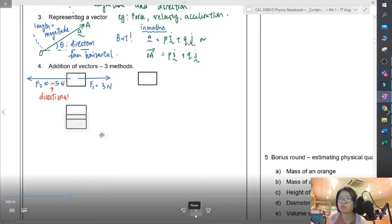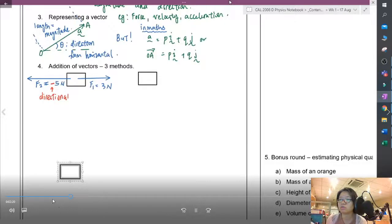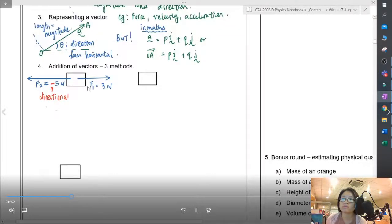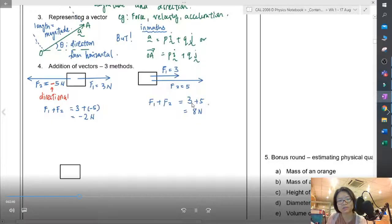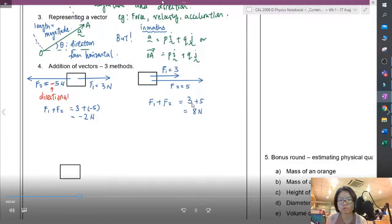This negative doesn't mean that the 5 N owes anyone anything. This is just directional. Since they're in opposite direction, to find the resultant force, I will just take F1 minus F2. What happens if they're in the same direction and parallel? Then your F1 plus F2 will be 3 plus 5, 8 N. This one, very straightforward.